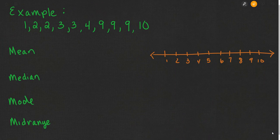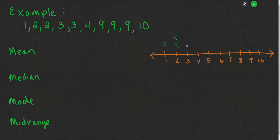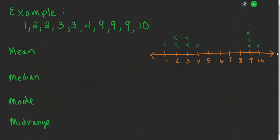Let's look at an example where we find the mean, median, mode, and midrange. I'll start by plotting the numbers on a number line to better understand the data. The numbers that appear more than once I'll mark with X's. We've got a 1, two 2s, three 3s, a 4, three 9s, and a 10. If we're looking for the central tendency, we can see that with 5 numbers on the left and 5 on the right, the midpoint falls at 3.5.